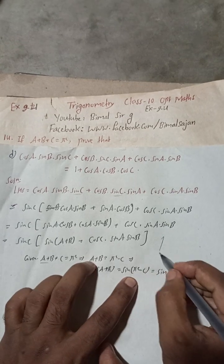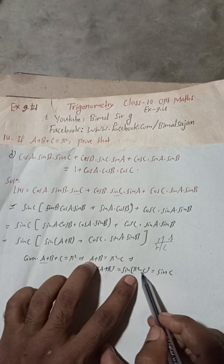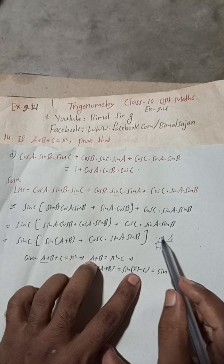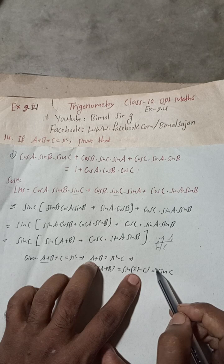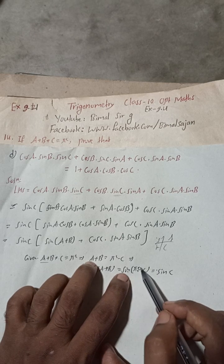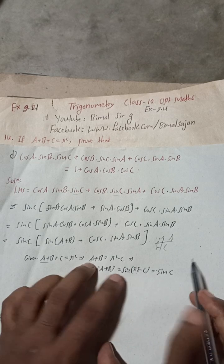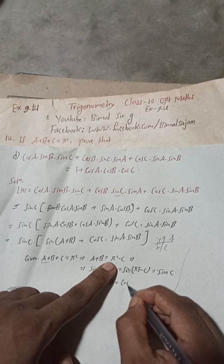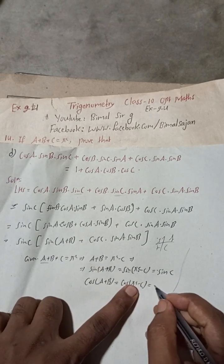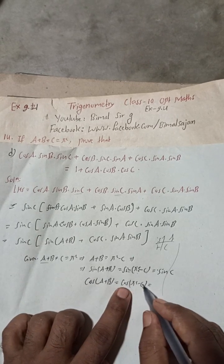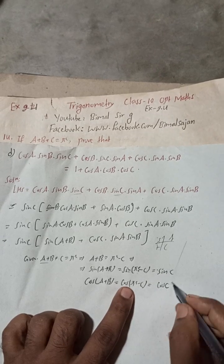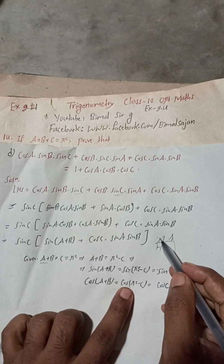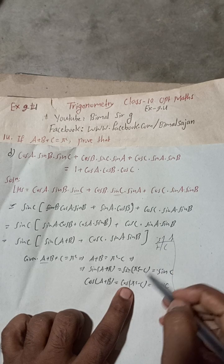By the CAST rule, π − C is in the second quadrant. In the second quadrant sin is positive, and since it is π (not π/2), sin remains sin. So sin(π − C) = sin C. Similarly, taking cos on both sides of A + B = π − C: cos(A+B) = cos(π − C). Since it is π, cos changes sign, so cos(A+B) = −cos C.